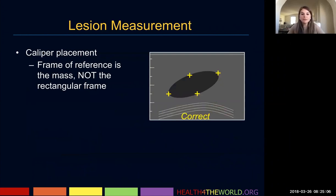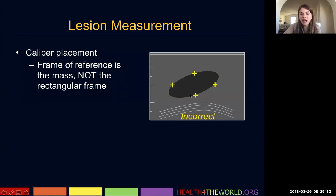When measuring a lesion, the frame of reference for caliper placement should be your mass, not the rectangular frame of your ultrasound image. Here you see the calipers have been placed correctly, along the largest axis of the lesion — this is the correct way to measure on breast ultrasound. Placing calipers relative to the ultrasound image frame would be incorrect. You really want to measure based off the mass itself.